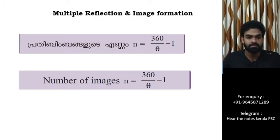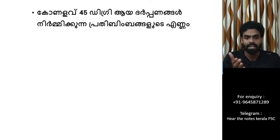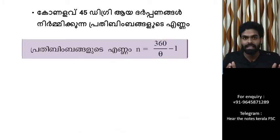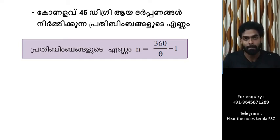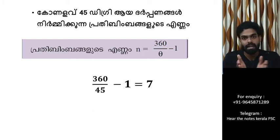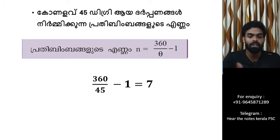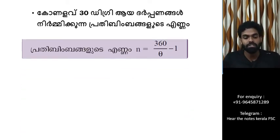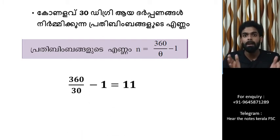Here are two examples. First, at an angle of 65 degrees: n = 360/65 − 1, which gives approximately 5 images. Second, at an angle of 60 degrees: θ = 30 degrees, so n = 360/30 − 1 = 11 images.